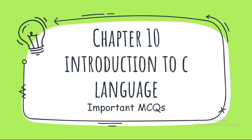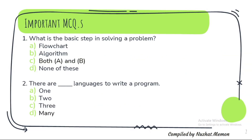Welcome back. Today we are going to do important MCQs of chapter number 10, Introduction to C Language of Standard 10. The first question is: what is the basic step in solving a problem? The answer is both A and B — that is flowchart and algorithm. Both of them are basic steps in solving a problem.